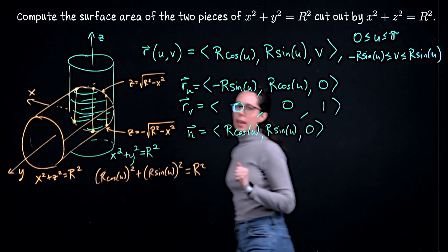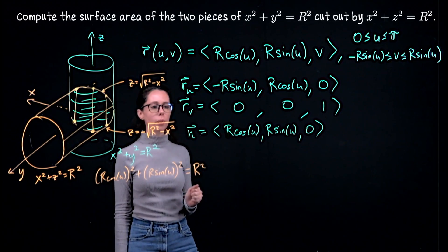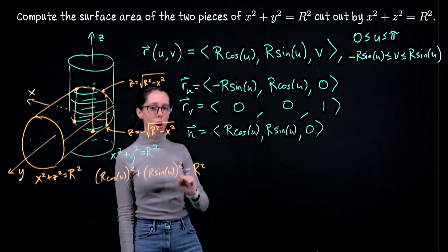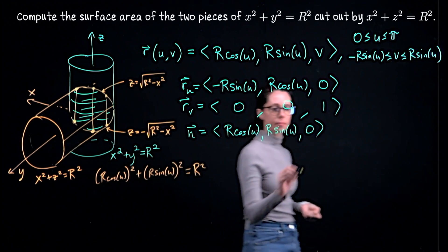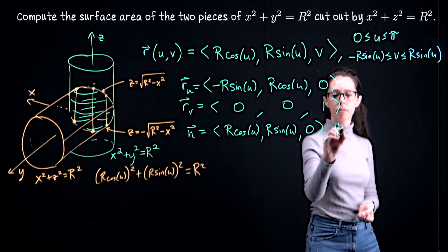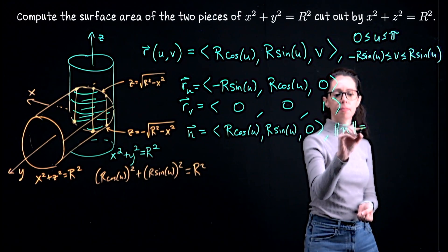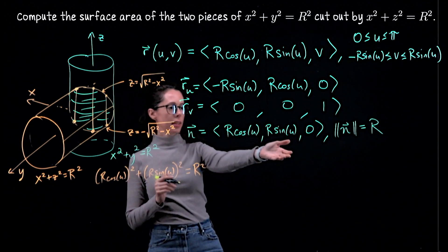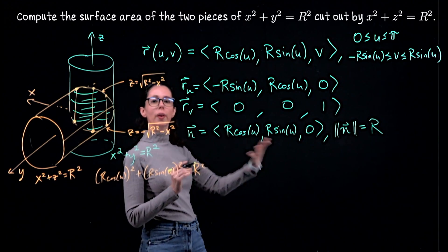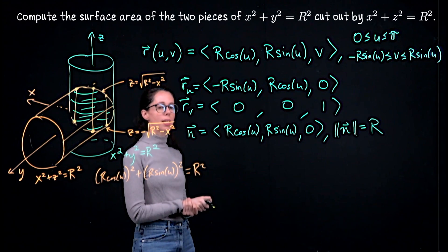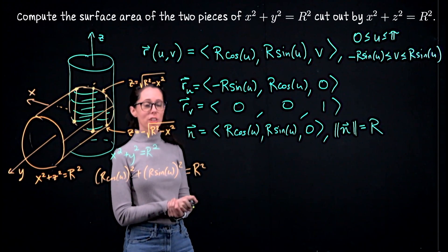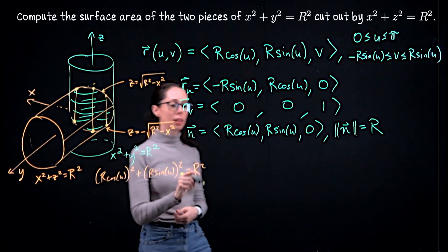For a surface area integral what we want to integrate is the magnitude of this vector. The magnitude of that is R. That's something that you can do pretty quickly. Because R cosine squared plus R sine squared is R squared. So you'd be doing the square root of R squared and you get R. So that's the length of this vector.